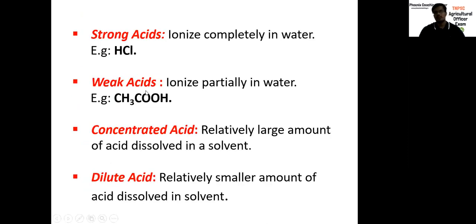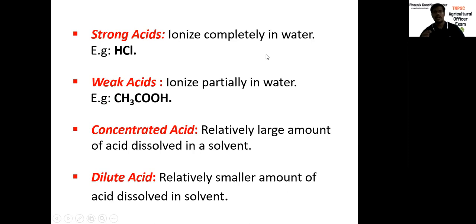Strong acids and weak acids are identified depending on strength. A strong acid, for example HCl, ionizes completely in water. If the acid ionizes completely in water, that is a strong acid. If the acid ionizes only partially in water, that is a weak acid. For example, acetic acid CH3COOH is a weak acid.